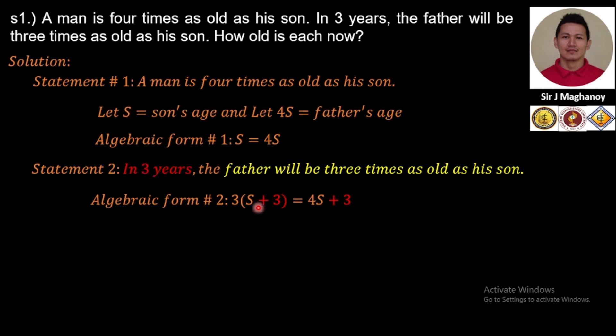In three years it will become S + 3. Then three times as old as his son, that is 3(S + 3) = 4S + 3. Now that we have our equation, let's evaluate.